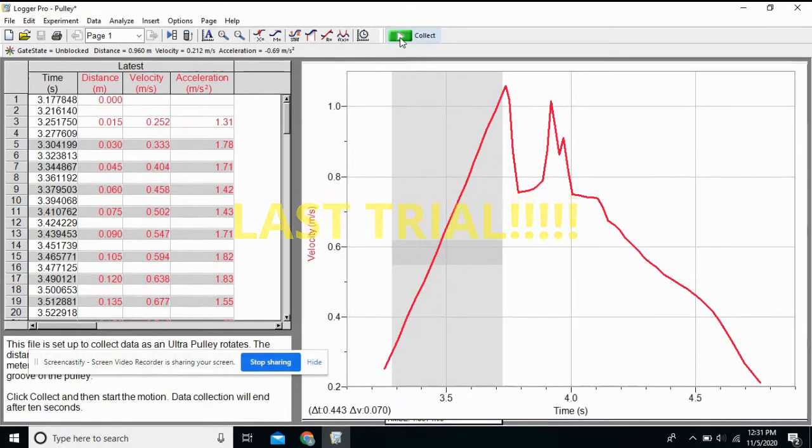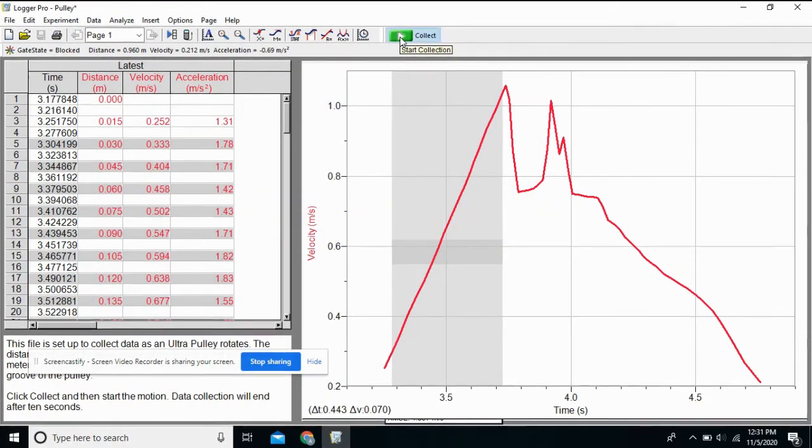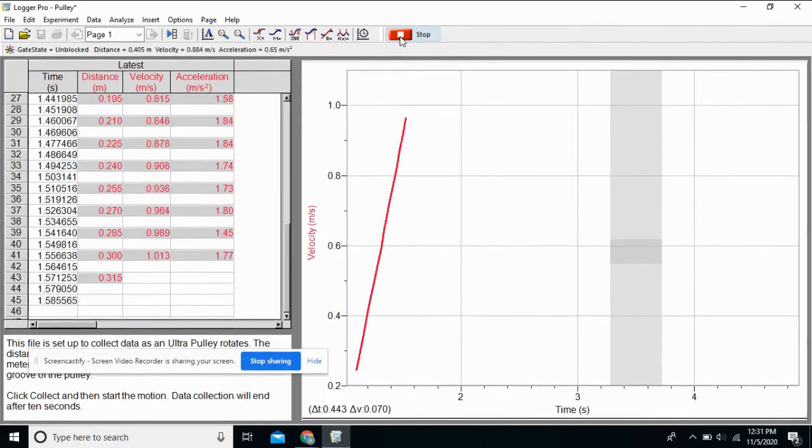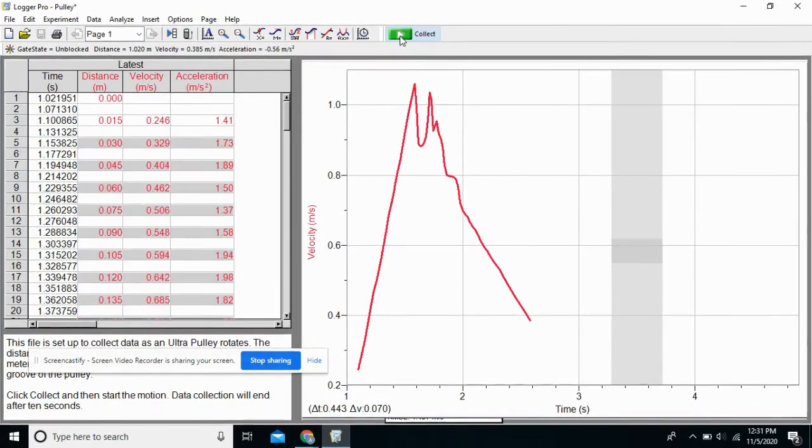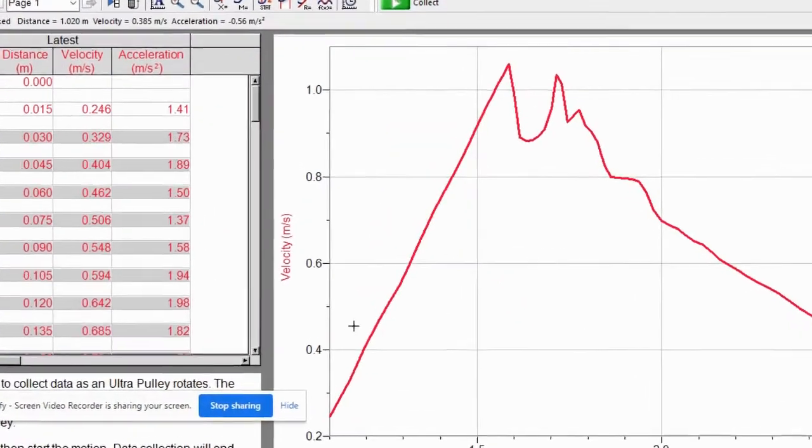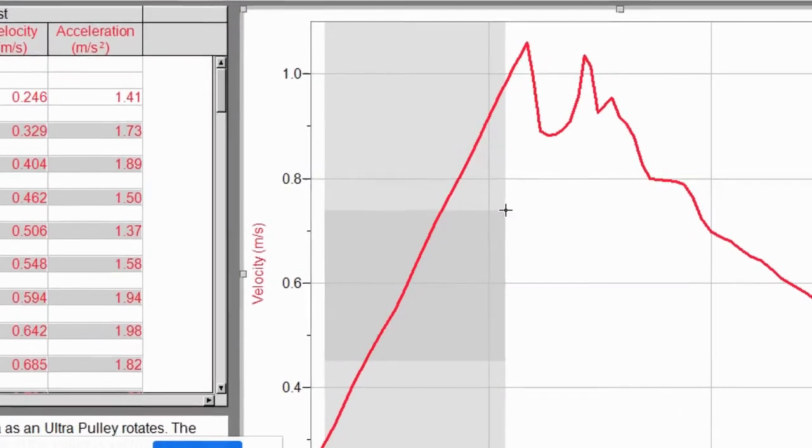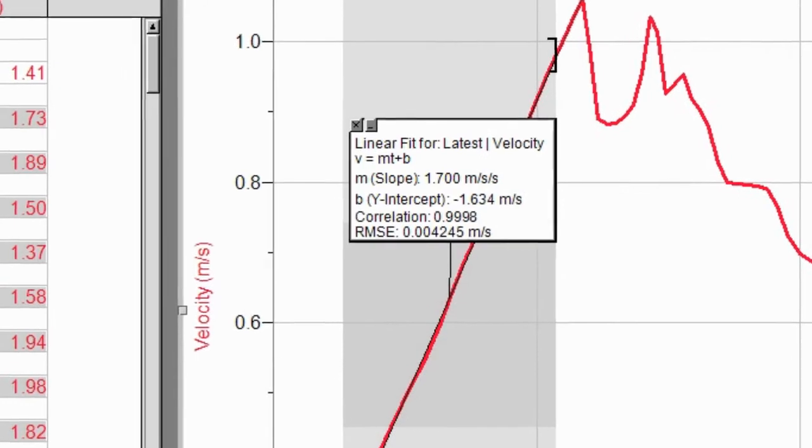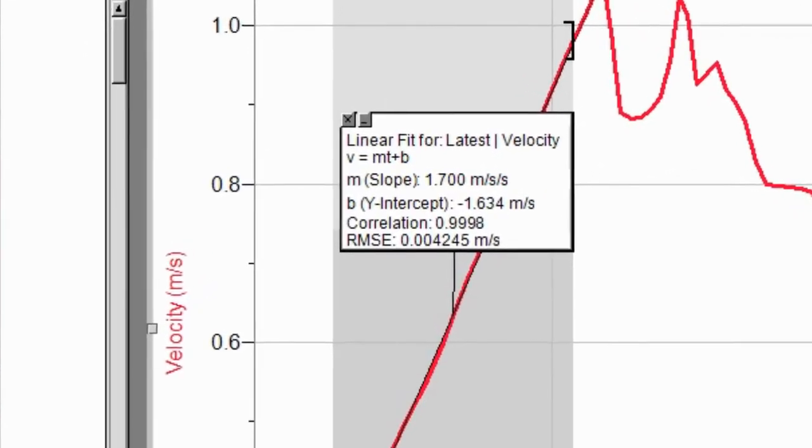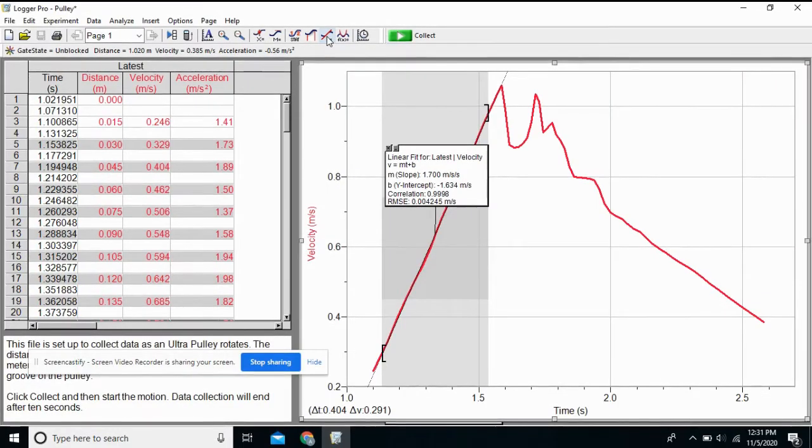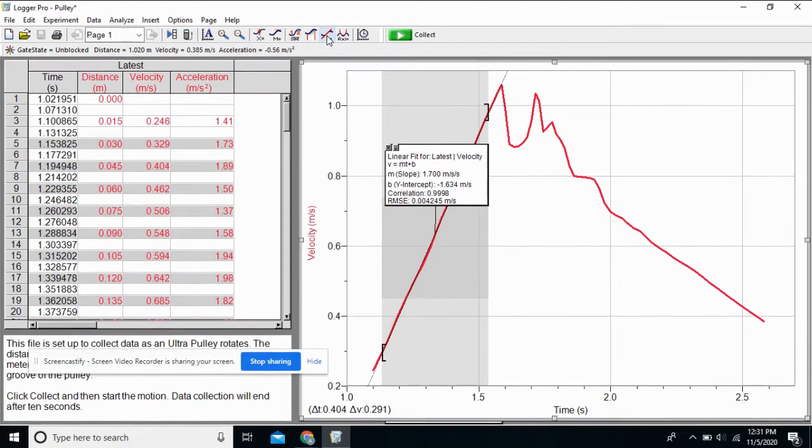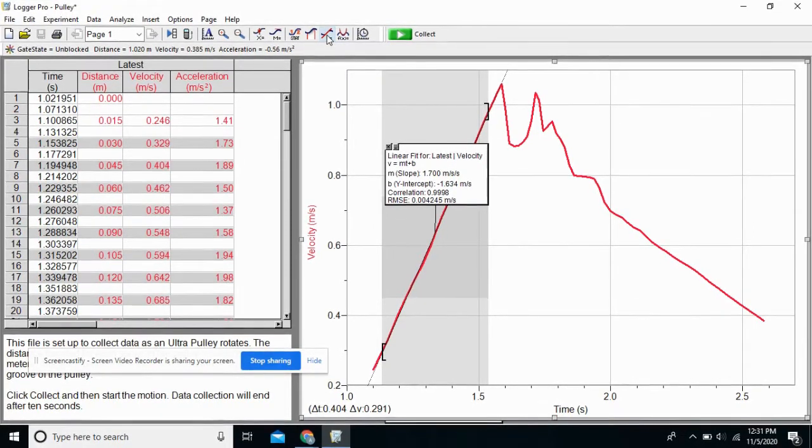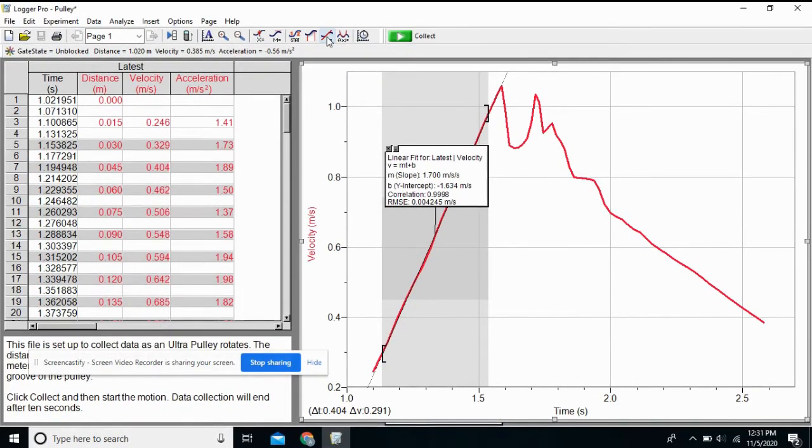Ready? Last trial. System three, trial four. All right. Control J. Let's find the slope of that line. And there it is. 1.700 and 1.7000. What do you think? Huh? Not bad.